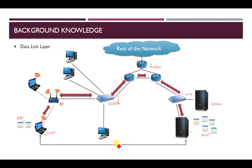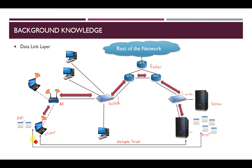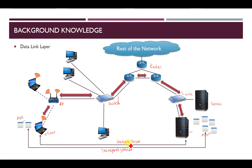Node-to-node delivery is handled by the network layer. The network layer manages this node-to-node delivery. If the client sends a packet to the server and it is meant for one specific application, then application-to-application delivery is maintained by the transport layer. We have already covered this in previous lectures. Just know: node-to-node delivery is done by your network layer and application-to-application by your transport layer.